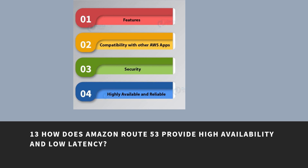How does Amazon Route 53 provide high availability and low latency? Amazon Route 53 has features to provide high availability and low latency. It has globally distributed servers — Amazon is a global service and consequently has DNS service globally. Any customer creating a query from any part of the world reaches a DNS server local to them, providing low latency. Route 53 also provides a high level of dependability required by critical applications.